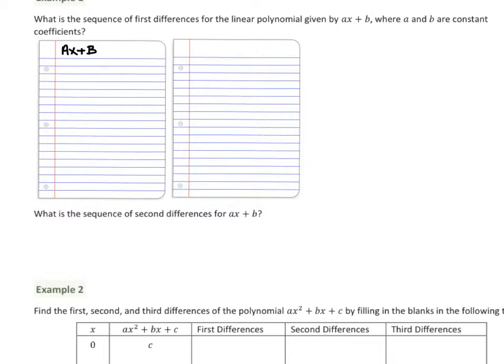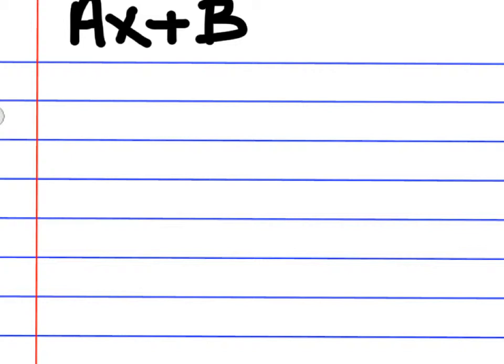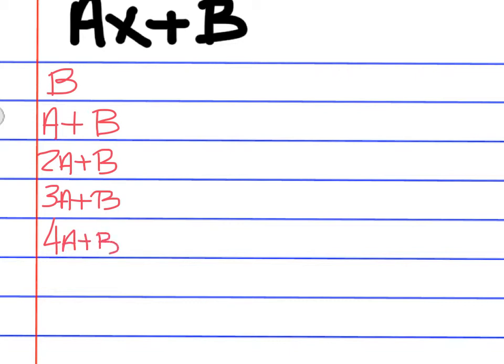What is the sequence of the first differences for the linear polynomial given by AX plus B, where A and B are constant coefficients? So if I want my first term, I could put a 0 in for X. If I put a 0 in for X, what would I get back? I would get B, because 0 times A is 0, but I still have a plus B out there. So we'll just make it B. All right, so if I put a 1 in for X, what would I come back with? A plus B. All right, A plus B. What if I put a 2 in for X? 2A plus B. What if I put a 3 in for X? 3A plus B. And what's the next one? 4A plus B.